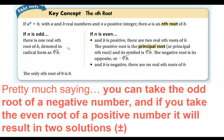This whole chart is pretty much saying: you can take the odd root of a negative number, but if you take the even root of a negative number you cannot do so without getting an imaginary number. And if you take the even root of a positive number, it will result in two solutions.